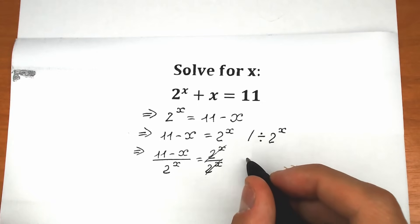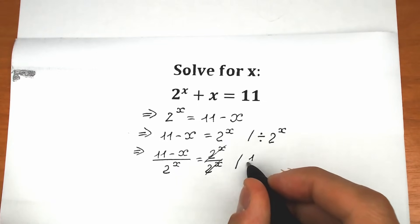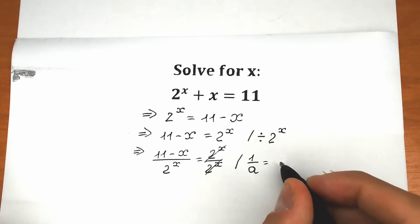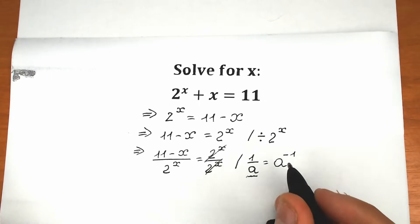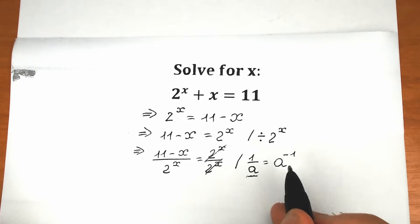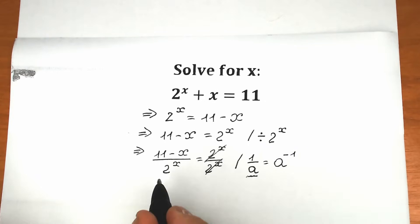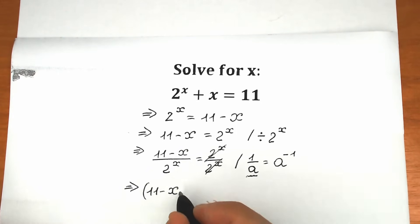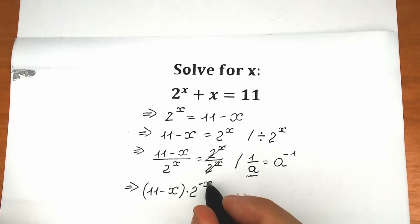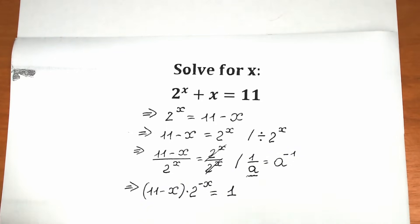We can also bring this 2 to the power x from our denominator to numerator. You need to know a really great property: if we have 1 over a, this is equal to a to the power minus 1. When we bring a from our denominator to our numerator we write minus 1 as the exponent. So right now let's bring 2 to the power x from the denominator to the numerator. As a result we have 11 minus x in parentheses times 2 to the power minus x, equal to 1.